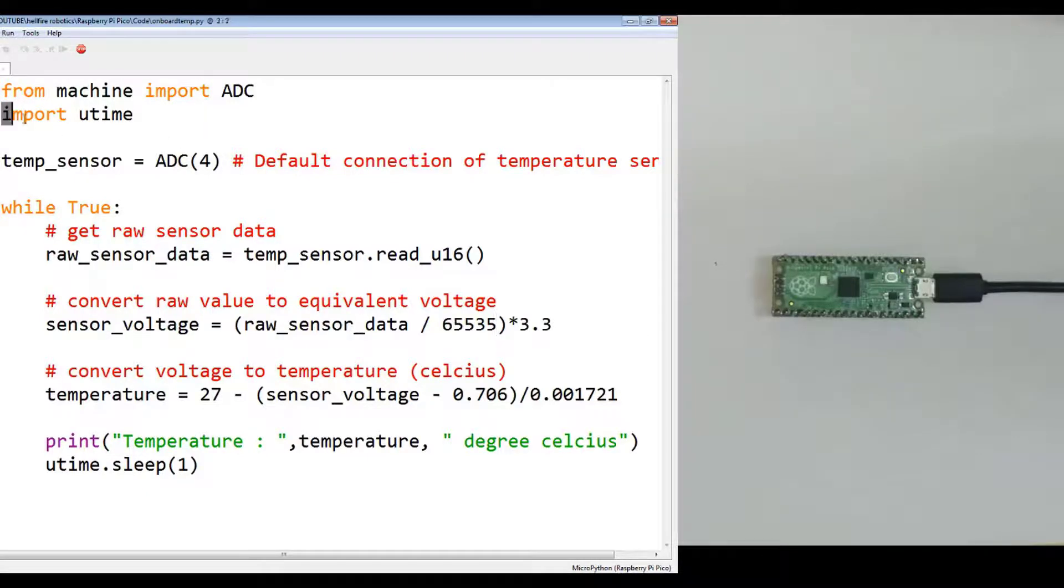Now you have to import another library, utime, to give some time delays. Use this ADC constructor at the default channel or ID number 4 in order to create a temperature sensor object or pin. This is the default connection of temperature sensor.